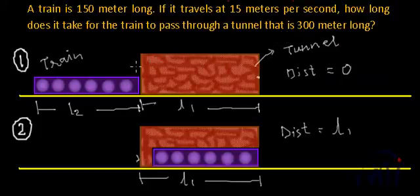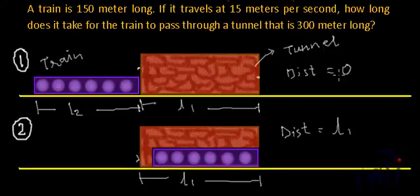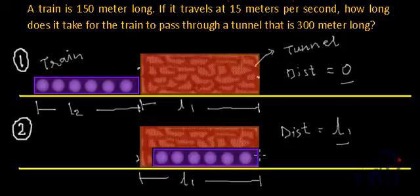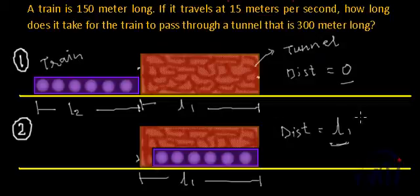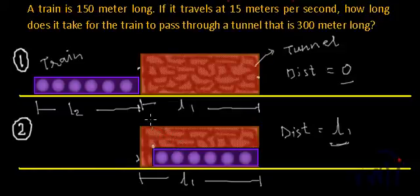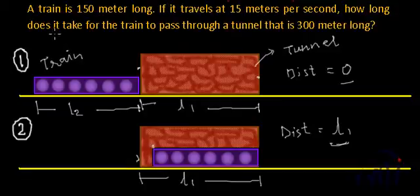We have to find the time when the train has just started crossing the tunnel and has crossed completely. There are three stages. First, the train is just starting — distance travelled is 0. Second, the front end of the train has reached the far end of the tunnel — distance travelled equals the length of the tunnel. But notice that in this second case the whole train is still inside the tunnel, meaning it hasn't crossed completely. The train has to travel some more distance, and we will find out how much.